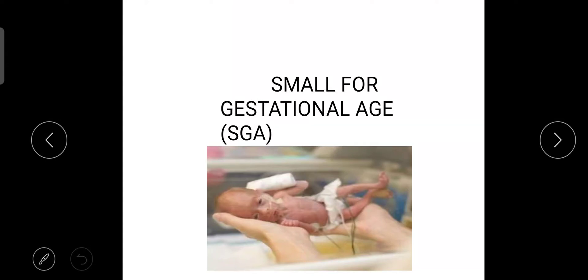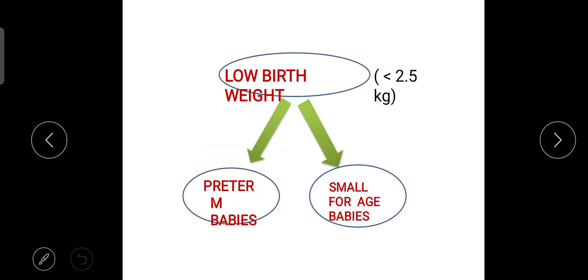Hello everyone, today we are going to discuss about a topic which is small for gestational age or in the short term you can say SGA. So start with the types of low birth weight. Already you have studied that we have one is preterm babies we have studied and one is small for age babies.